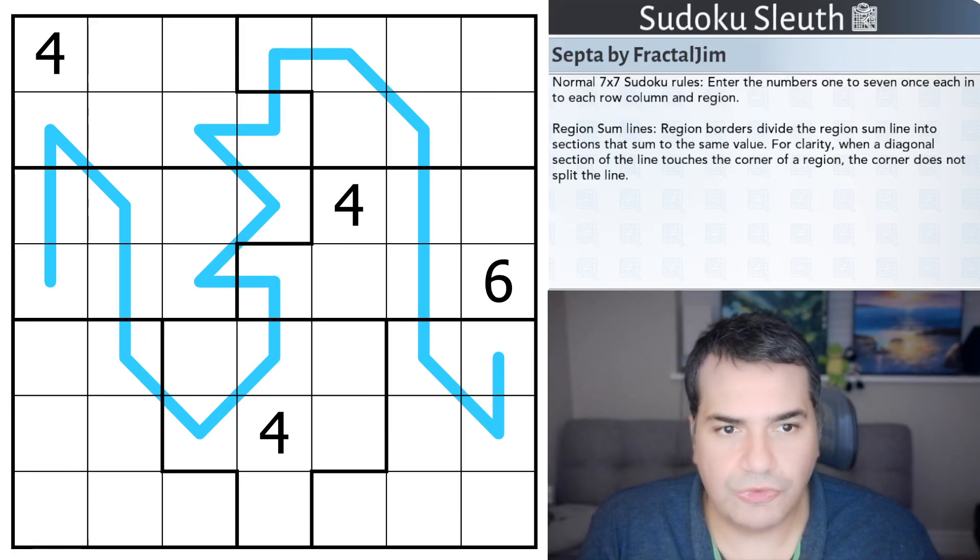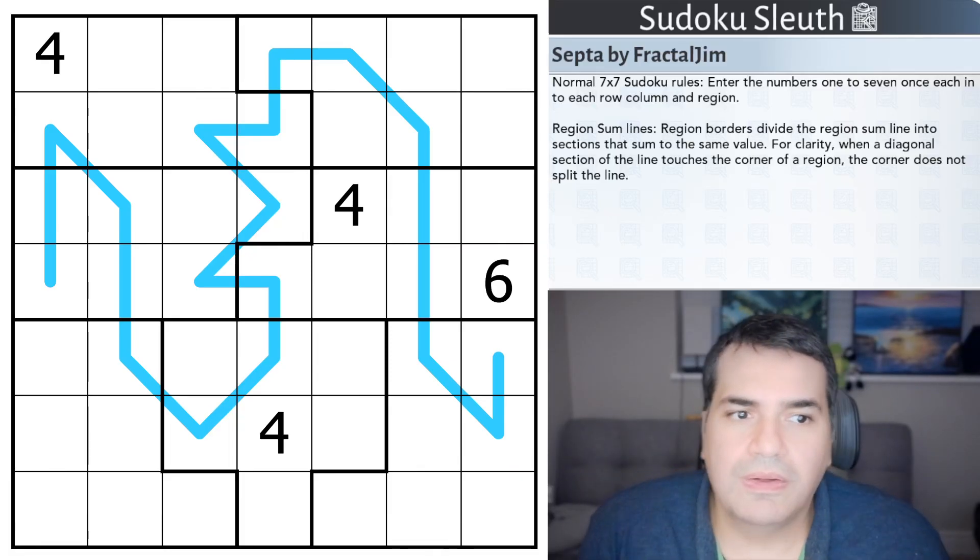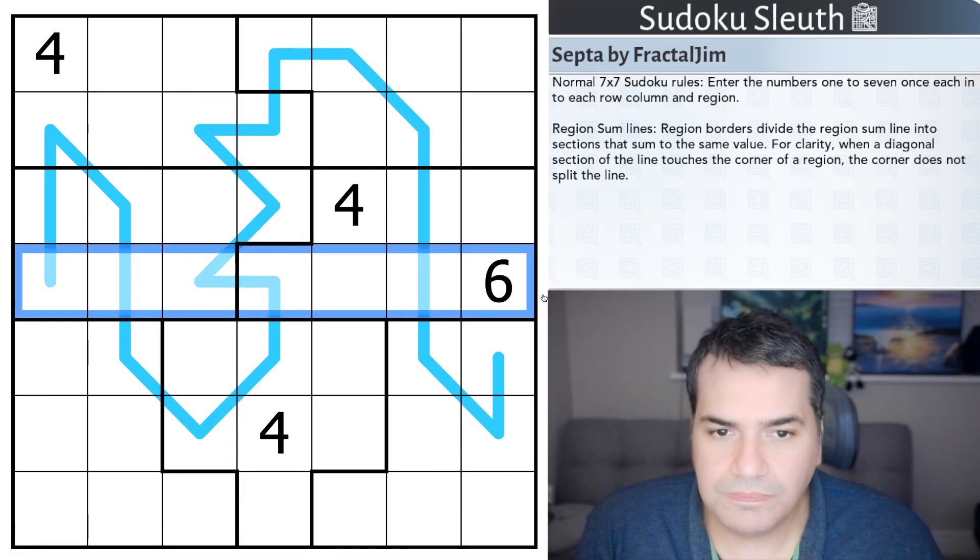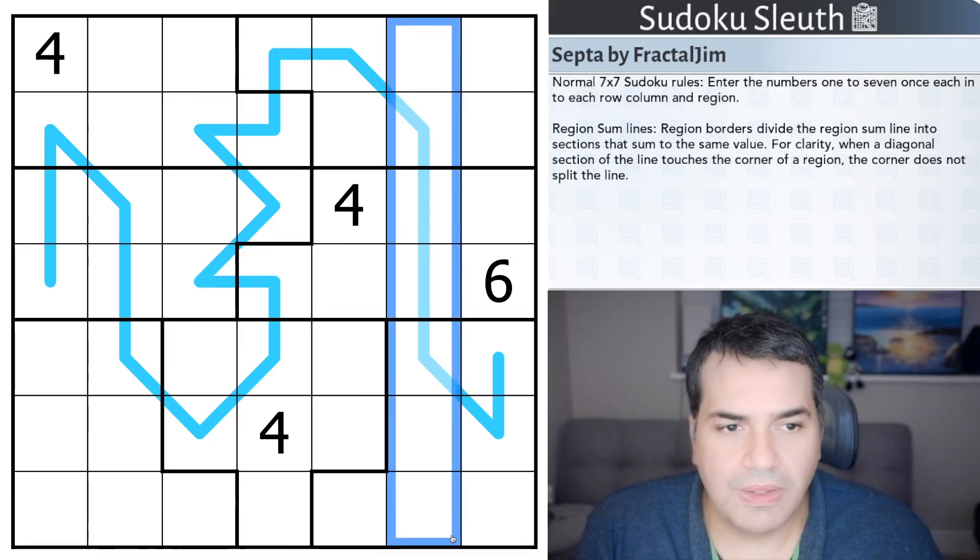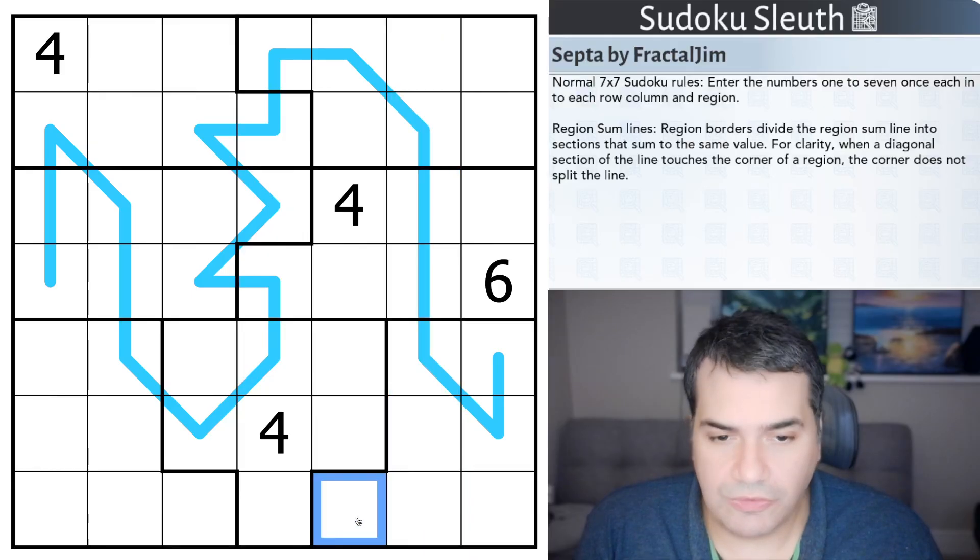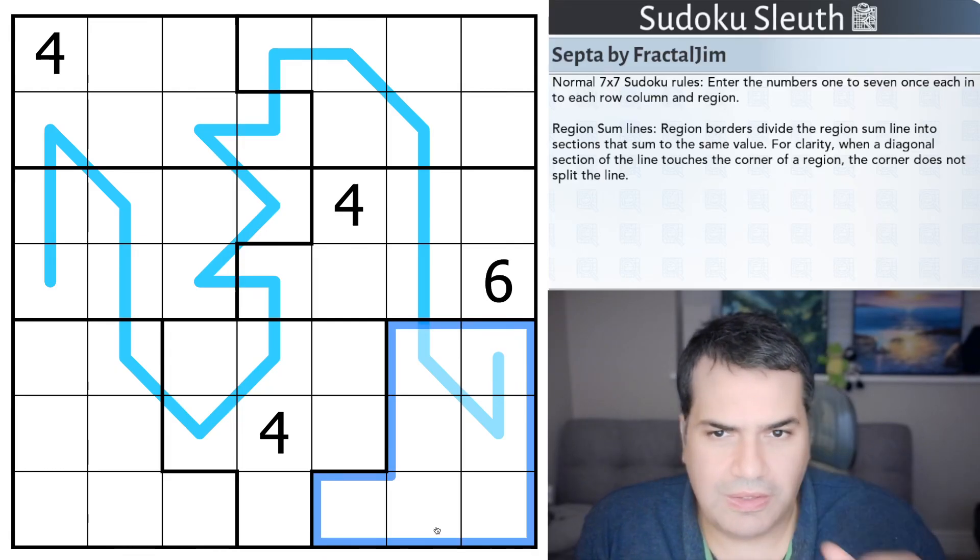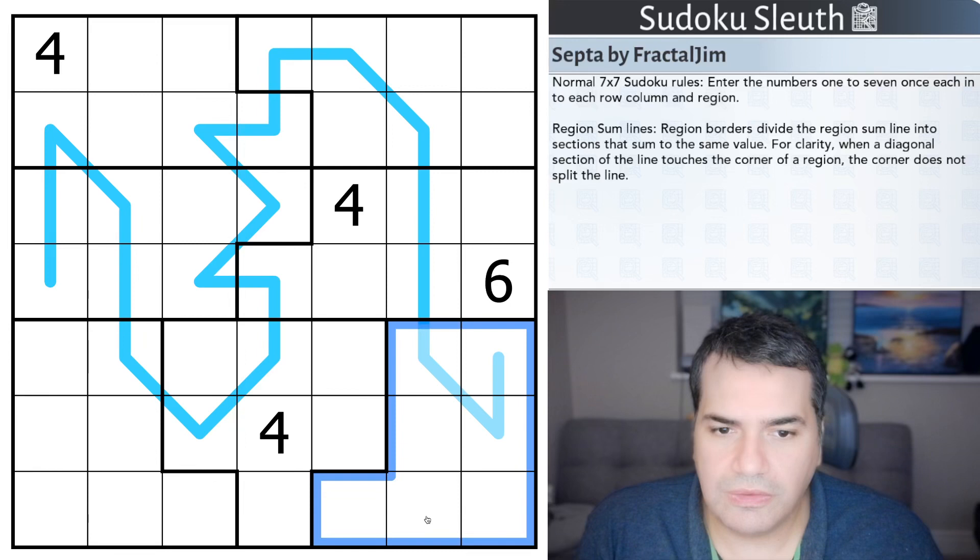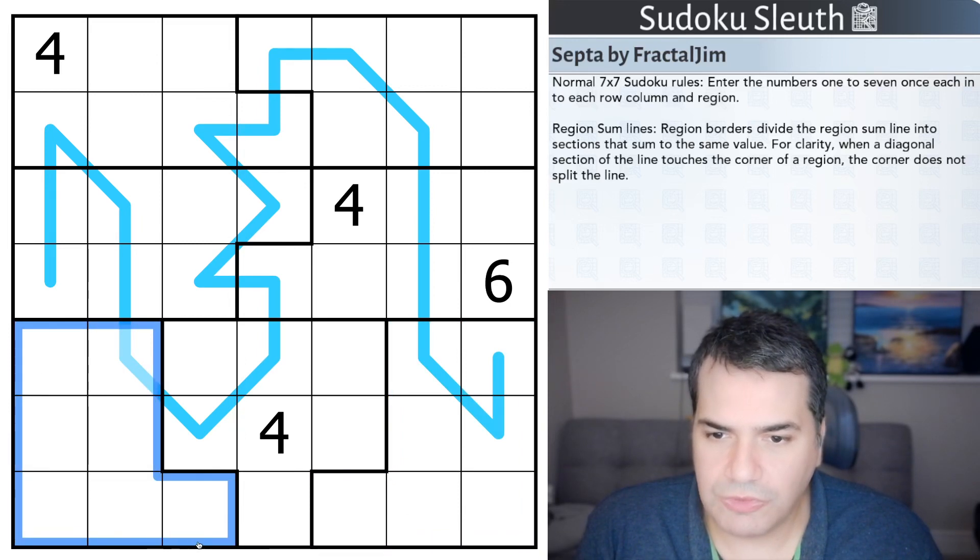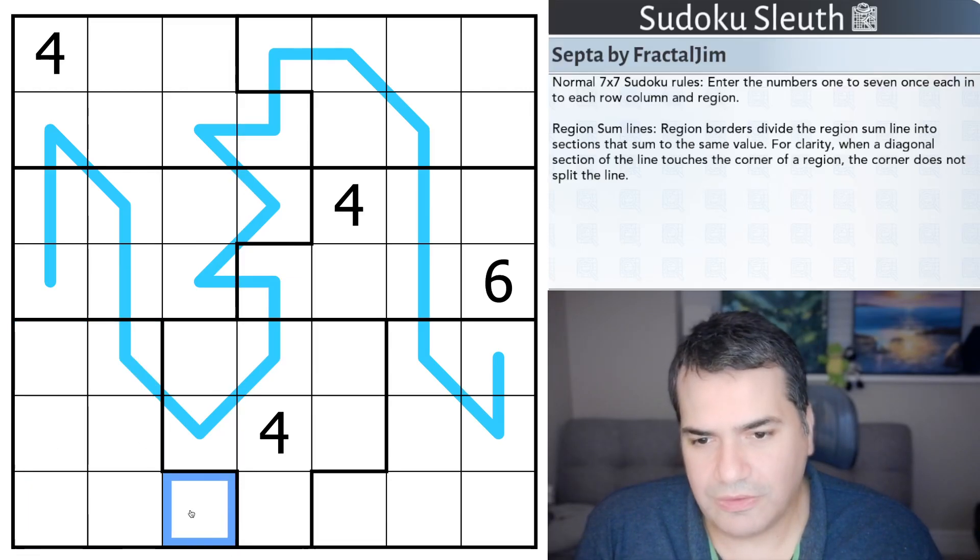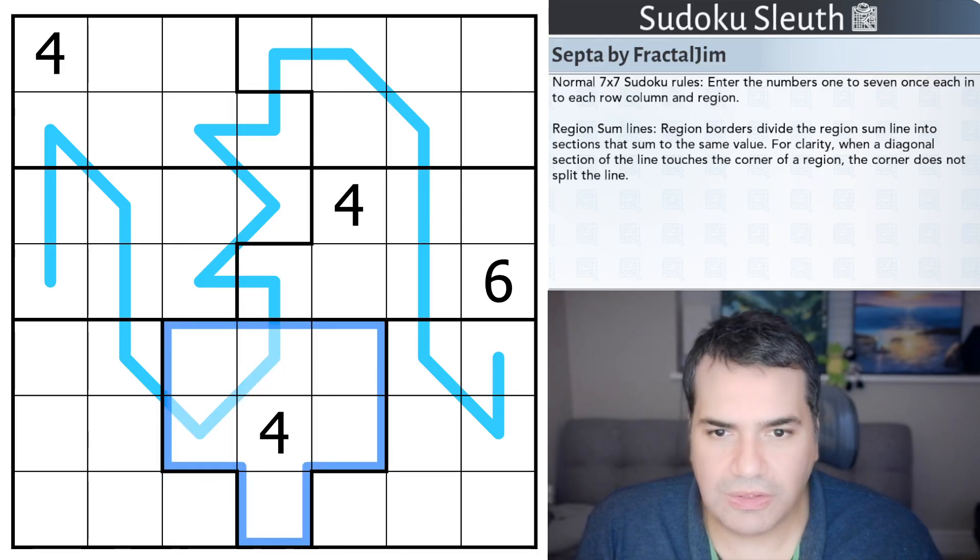I don't think I've actually played any puzzles from Fractal Gym before. It's a one-star difficulty rating. It has got a rating of 93% as of the time of recording. So, looking forward to it. Fairly straightforward set of rules. Normal 7x7 Sudoku rules, if such a thing is normal. Enter the numbers 1 to 7 once each in each row, each column, and each of the regions. And you can see this is an irregular Sudoku.